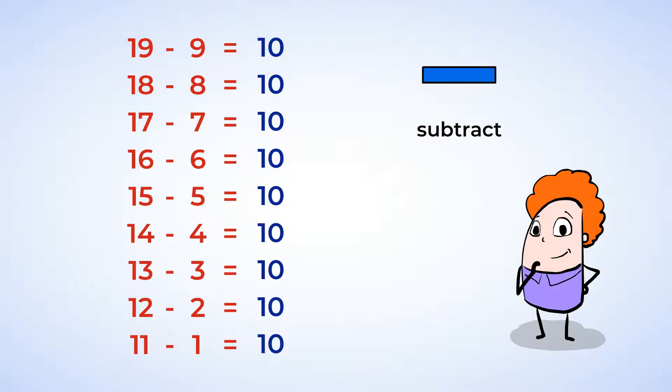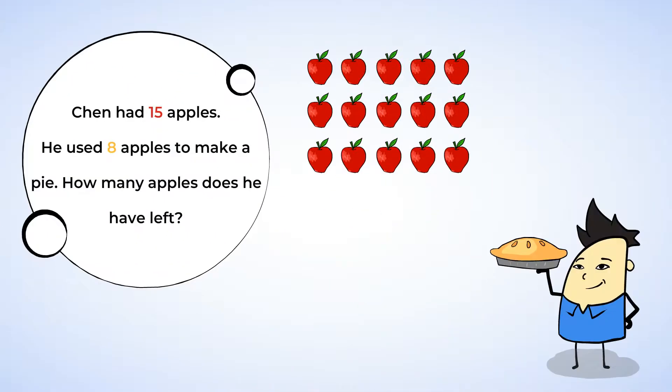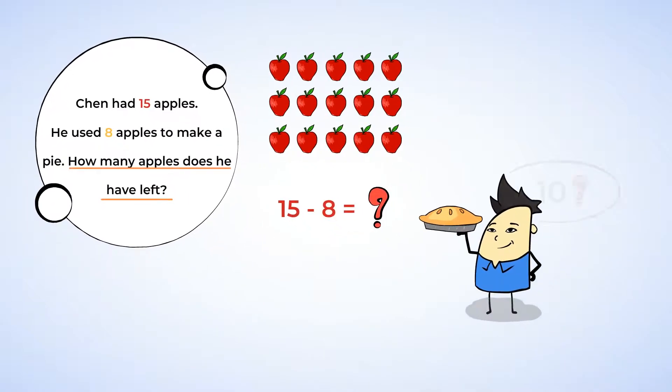Chen had 15 apples. He used 8 apples to make a pie. How many apples does he have left? What is 15 minus 8? Where is 10 hiding here? We just learned that 15 minus 5 equals 10. And there it is. Let's do that first. Now there are 10 apples left.